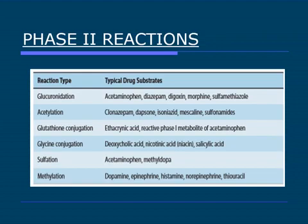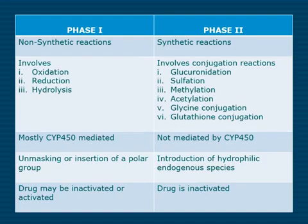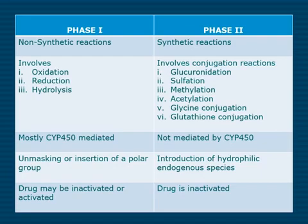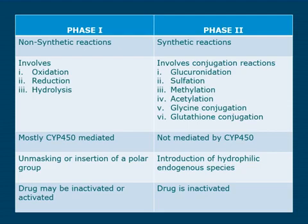Differences between phase one and phase two reactions — a common exam question. Phase one reactions are non-synthetic; phase two are synthetic and coupling reactions. Phase one involves oxidation, reduction, hydrolysis; phase two involves conjugation reactions like glucuronidation, sulfation, methylation, acetylation, glycine, and glutathione conjugation. Phase one is mostly cytochrome P450-mediated; phase two is not. Phase one unmasks or inserts a polar group; phase two introduces a hydrophilic endogenous species. Phase one may inactivate or activate drugs; phase two usually inactivates them. Phase two reactions are relatively rapid compared to phase one.